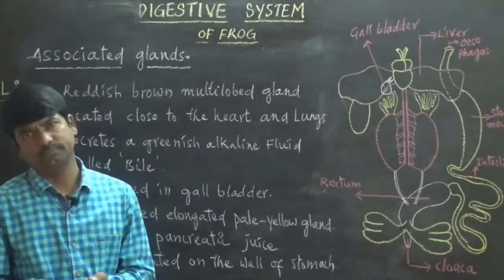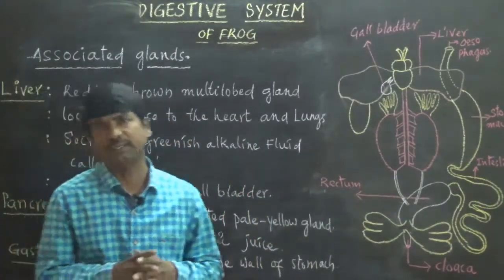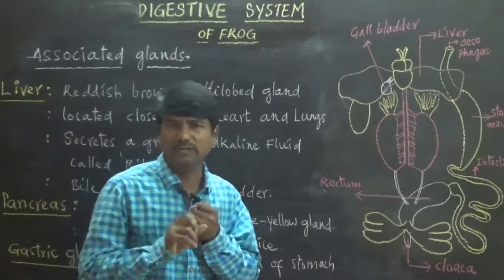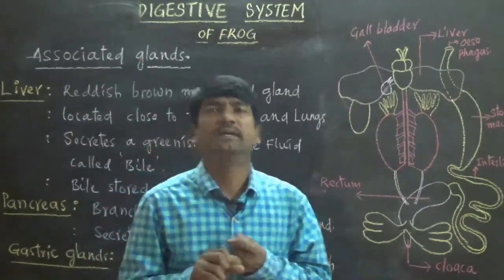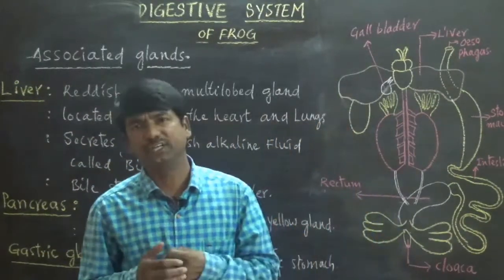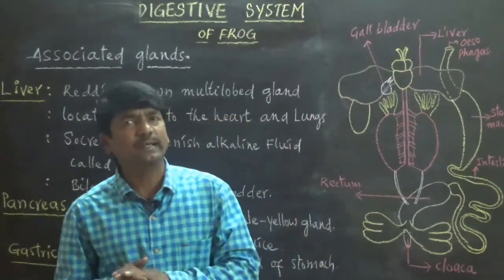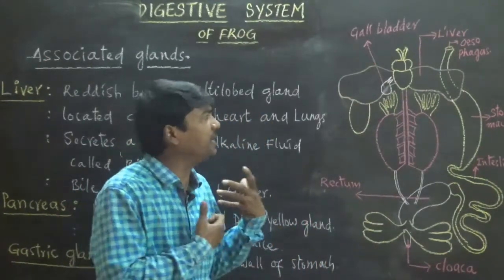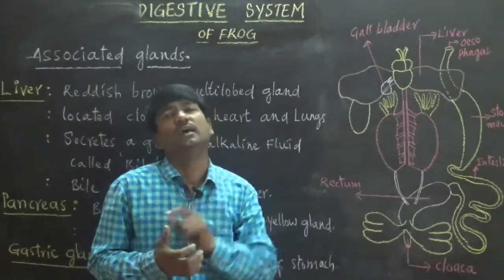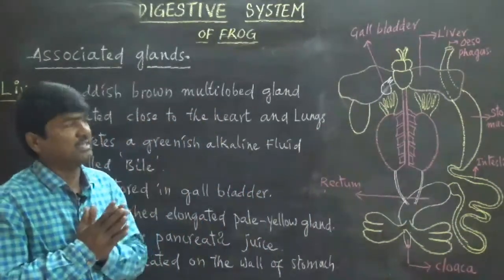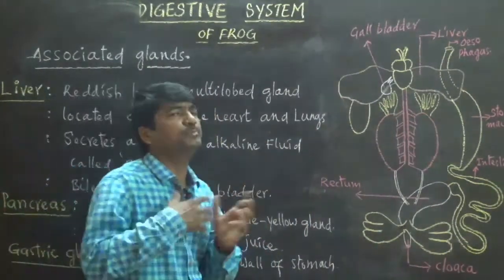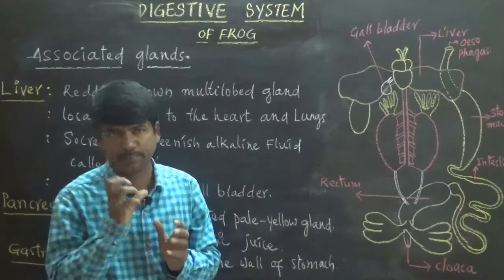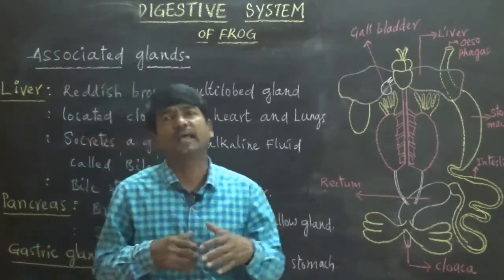The associated glands of frogs include three types: liver, pancreas, and gastric and intestinal glands. The liver is a reddish-brown, multi-lobed structure located close to the heart and lungs. The liver participates in the production of bile juice; it does not produce enzymes or hormones, but it produces a specific greenish alkaline fluid called bile.